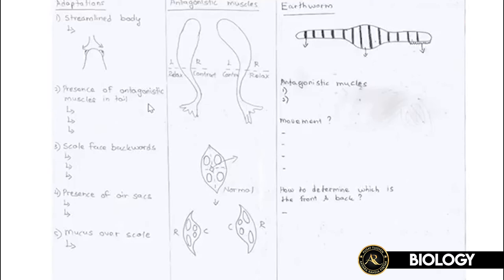Adaptation number one is the streamlined body. A fish's head shape can literally break water friction. Humans can't do that — that's why we put our hands in front while swimming, using them to push water behind us. For a fish, the body shape itself breaks the water friction. Humans have actually used this streamlined shape as the basis for building boats.